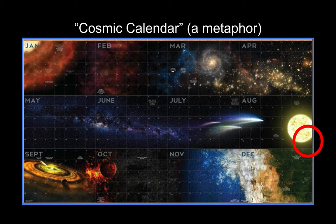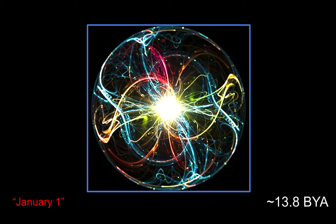It takes all the way till August 31st for our sun to be born, which is kind of crazy. And humans, at the very, very, very last 15 seconds of December 31st at 11:59 p.m. and 45 seconds — that's when humans came around. We are new. We're brand new to the universe and we haven't been around that long. We're not even out of the womb yet. So let's keep that in mind as we study our story of humanity, which began January 1st, 13.8 billion years ago.